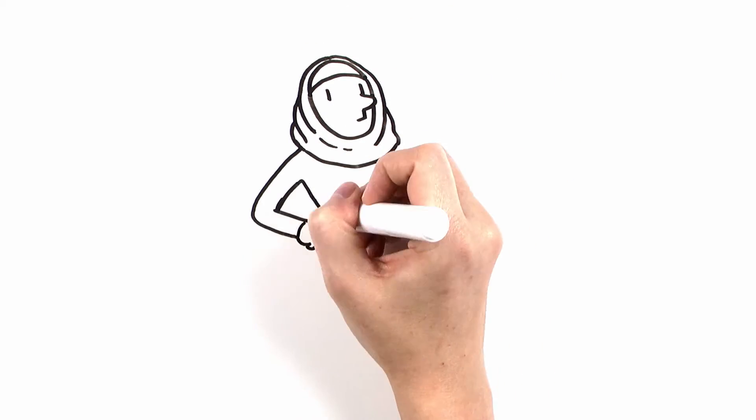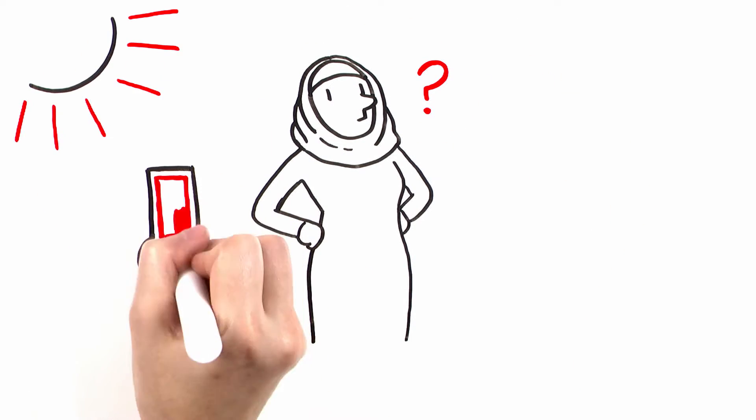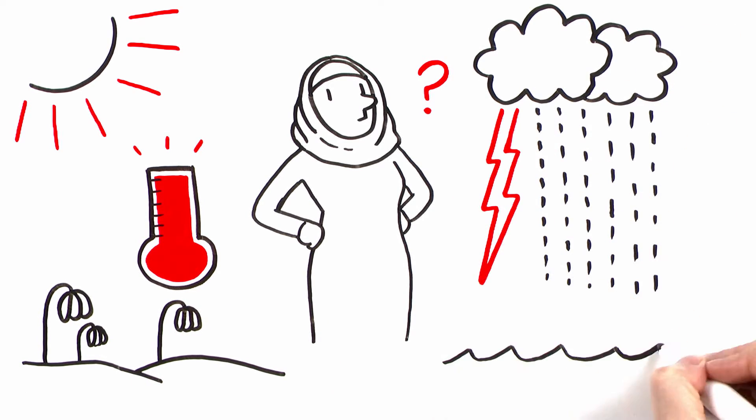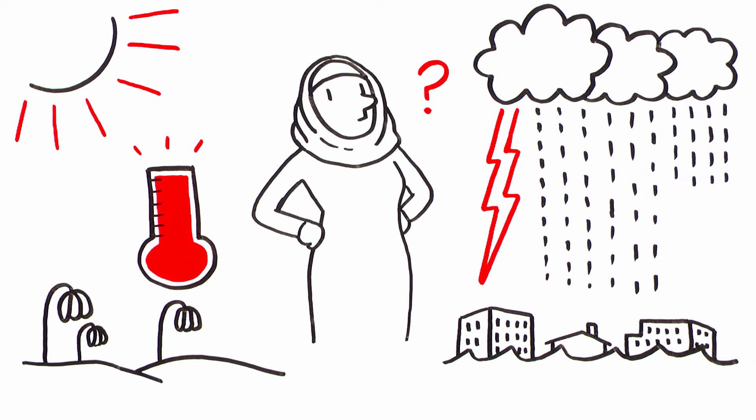Does it seem like heat waves are hotter and more frequent? Droughts last longer? The heaviest downpours that lead to damaging floods happen more often?